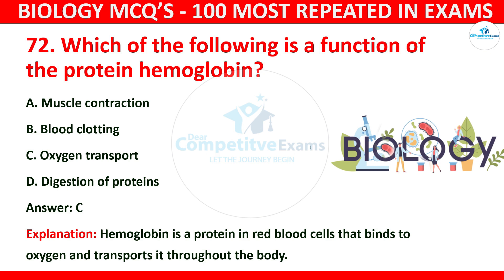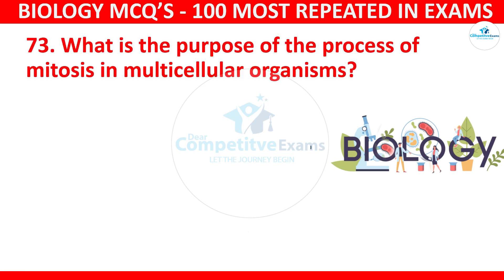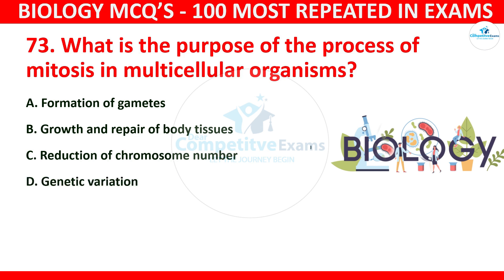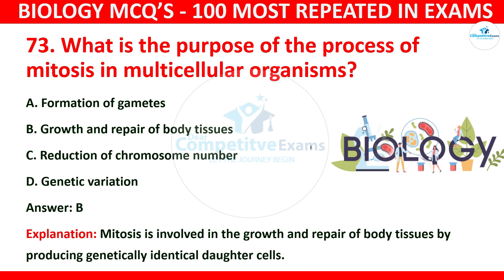Question number 73: What is the purpose of the process of mitosis in a multicellular organism? The options are formation of gametes, growth and repair of body tissue, reduction of chromosome number, or genetic variation. The correct answer is B: growth and repair of body tissues. Mitosis is involved in the growth and repair of body tissues by producing genetically identical daughter cells.